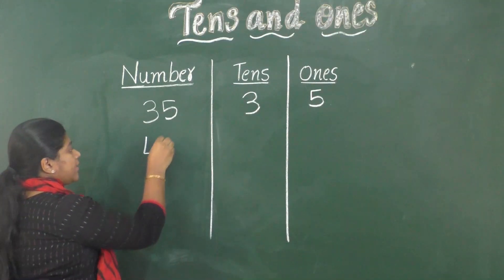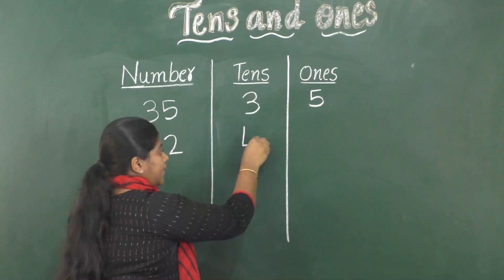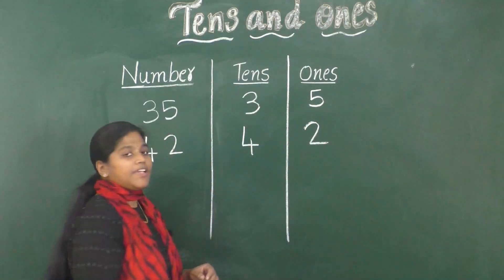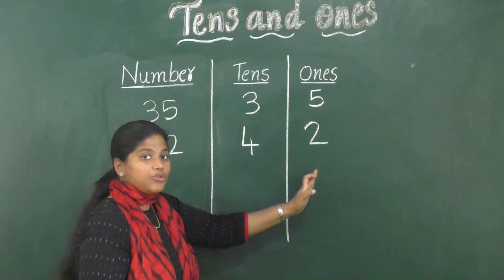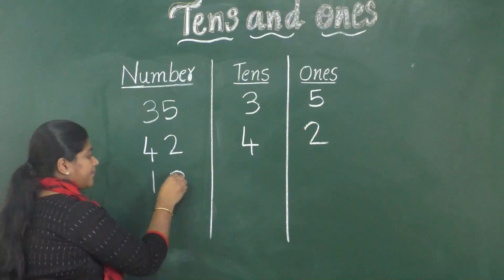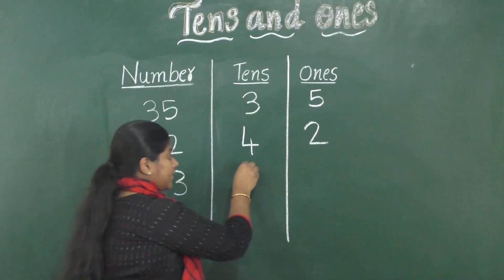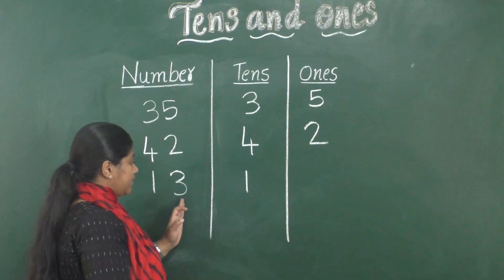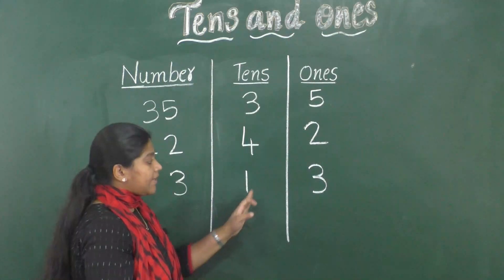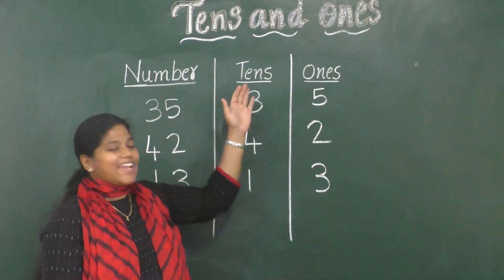Another example: 42. Number 4 in tens place and number 2 in ones place — 4 tens and 2 ones. Let's see one more example: 13. The number on the left side is 1, so 1 goes in tens place and the number 3 goes in ones place. That means 1 ten and 3 ones — the number is 13. In this way we can write numbers in tens and ones place.